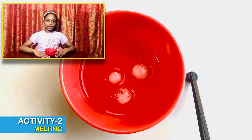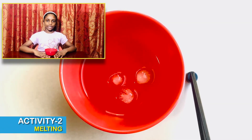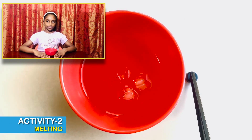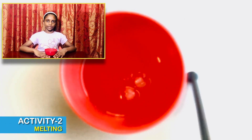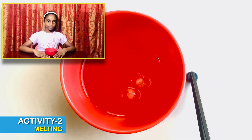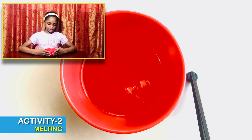Solids have definite shape and volume, and liquids do not have a definite shape but do have a definite volume. The molecules in a solid are tightly packed — they're always together, like you and your friends together. When I put the ice cubes in the bowl, they started gaining heat from their surroundings and the bowl. The space between the molecules in the solid started increasing and finally it became a liquid.